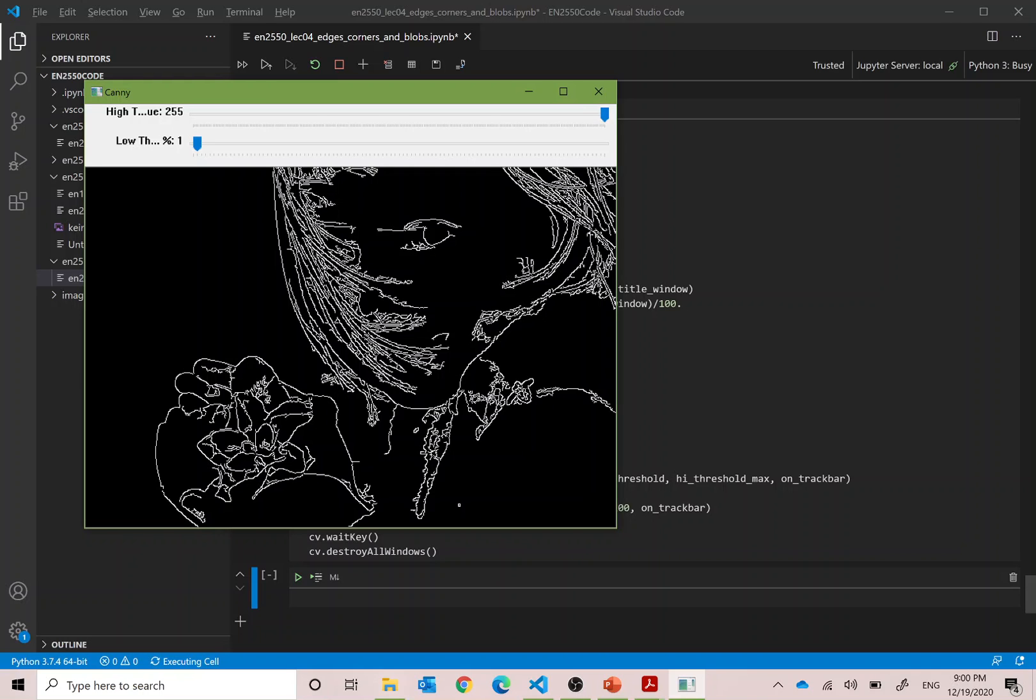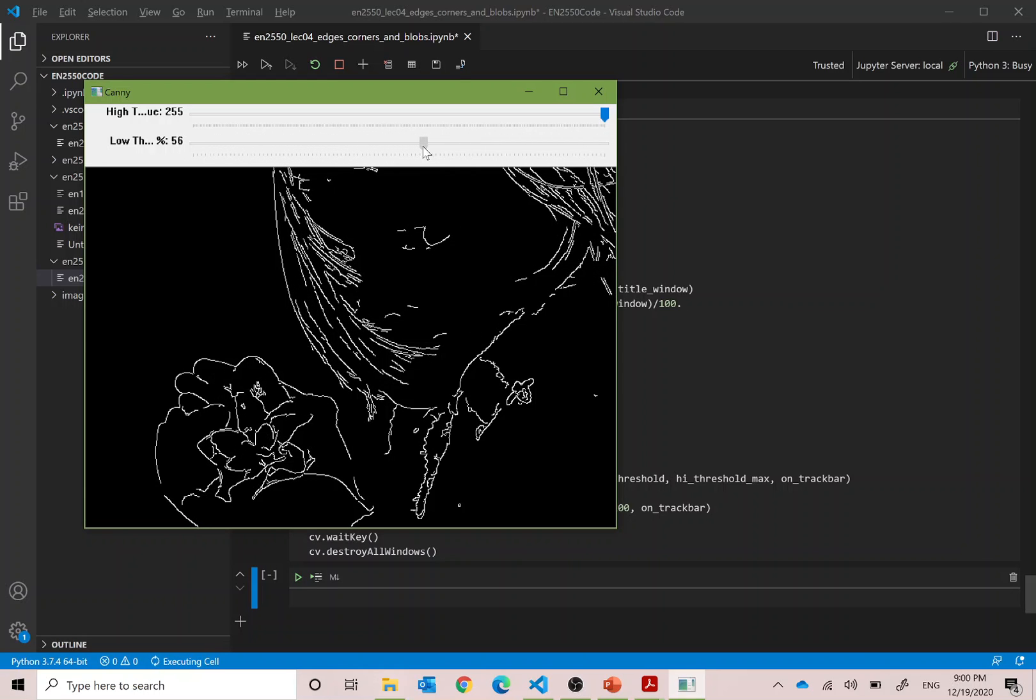I see carefully. Now there are some edges. Let us look at the eye area of the girl. If I increase the low threshold from 1 percent to 100 percent, the low threshold is increased, then you can see the edges disappearing. Because the low threshold is high, the edges do not actually continue.